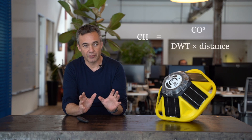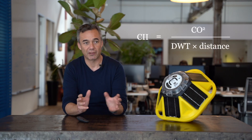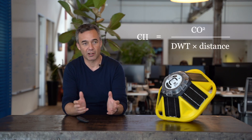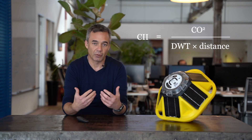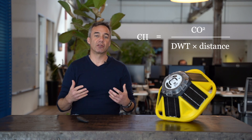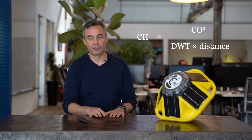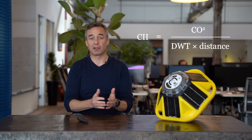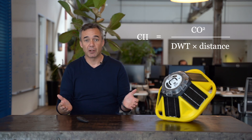Carbon intensity indicator, or CII, is really a metric that measures emissions per unit of distance. If you look at the equations, there's always a deadweight tonnage or gross tonnage in there as well, but it's technically just a constant and it doesn't really matter for the dynamics of the parameter. So what we're measuring really is how much CO2 is emitted per unit of distance.